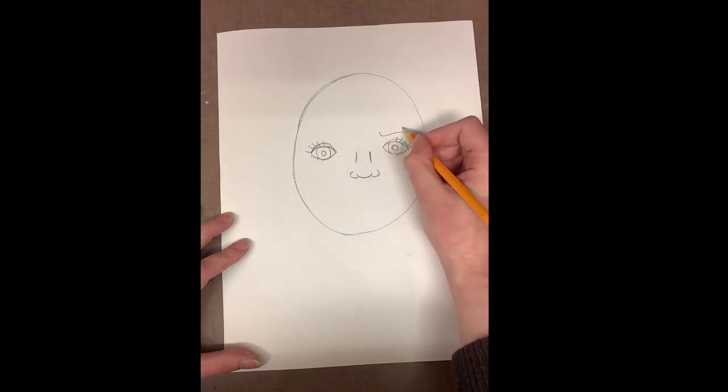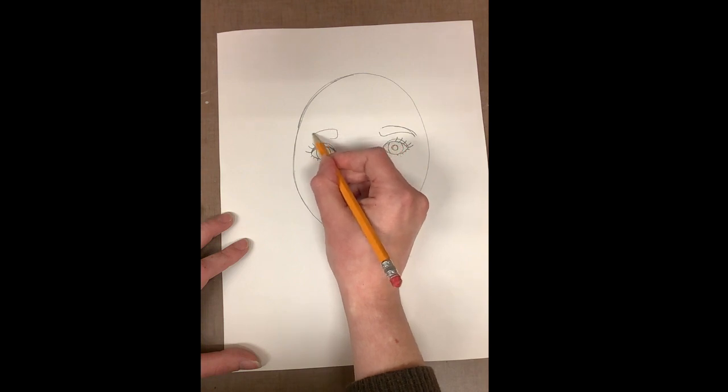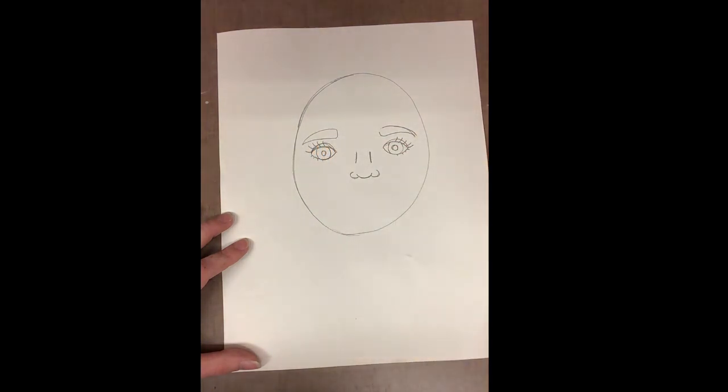Next I'll draw my eyebrows above my eyes. To do this, I draw simple curving lines to create a curving shape.